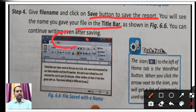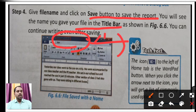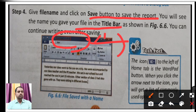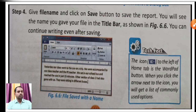The file name shows on the title bar, where the maximize, minimize, and close buttons are located. You can continue writing even after saving — you can add more content to the file without any problem and save it again. The WordPad button icon appears on the left of the Home tab. When you click the arrow next to the icon, you get a list of commonly used options shown in the Home tab.